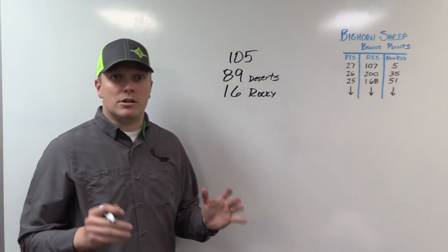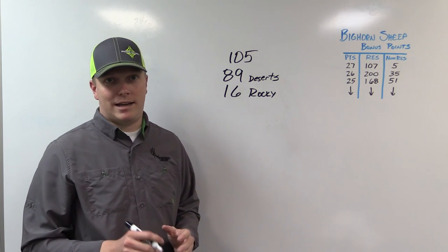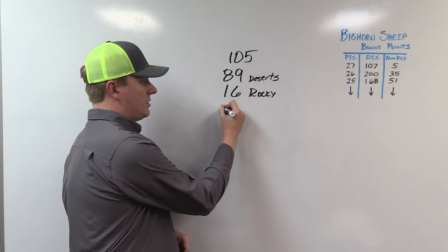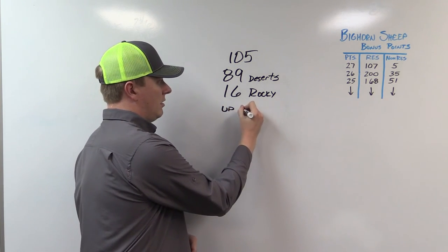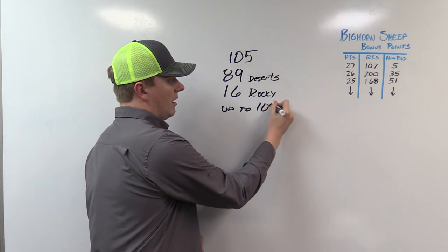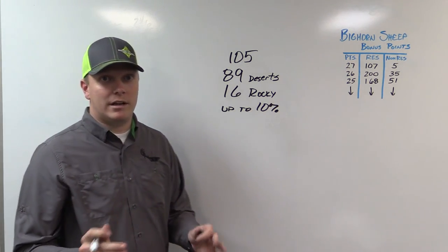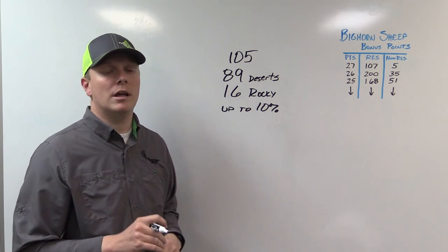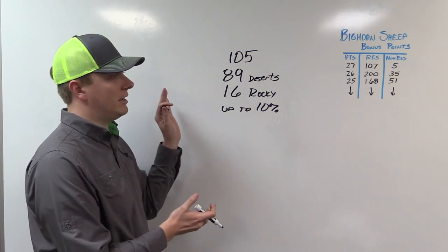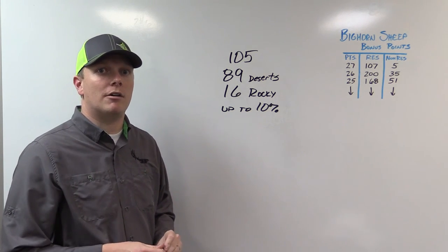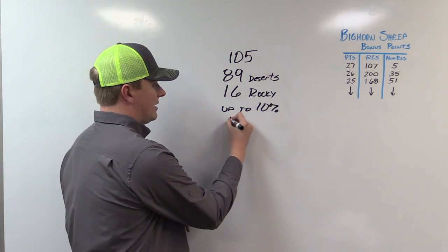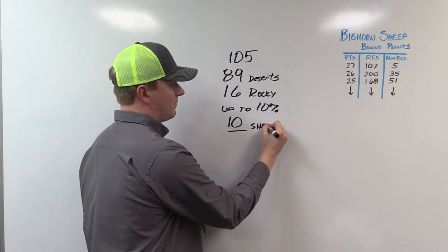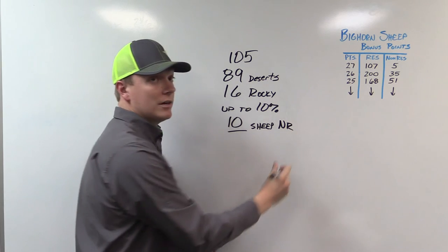As you know, there's still a 10% non-resident cap for all draws in Arizona. Non-residents can have up to 10% of the available tags. Now for deer and elk and antelope that's per hunt, per hunt code. For sheep and bison it's for the whole species. So essentially non-residents can have 10 tags this year. 10 sheep tags for non-residents.